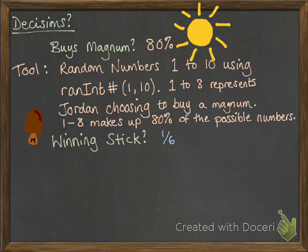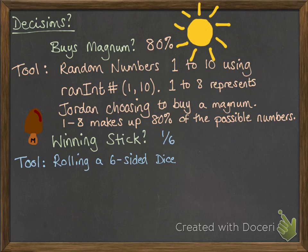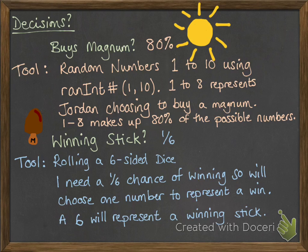Of those magnums that he buys, 1 in 6 of them is a winning one. For this, we're going to use rolling a 6-sided dice. We could use random numbers from 1 to 6, or putting 6 different coloured cubes in a bag and picking them out, but I'm going to use rolling a 6-sided dice. We need a 1 in 6 chance of winning, so we'll choose one number to represent a win — in this case, a 6. It doesn't actually matter which number we choose, as long as we're picking 1 out of 6. So a 6 will represent the winning stick.